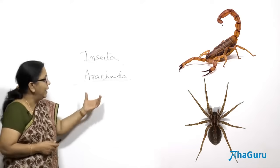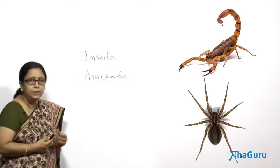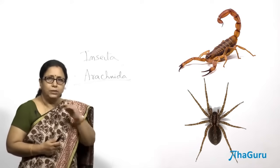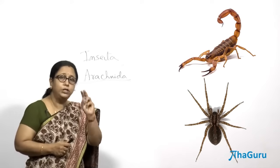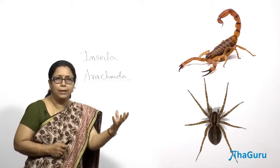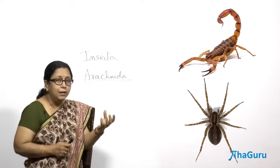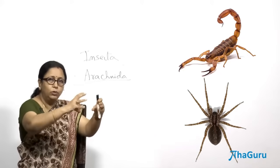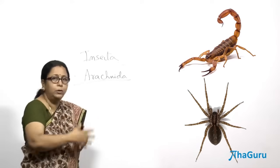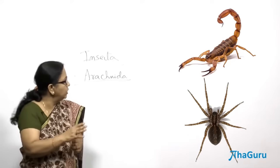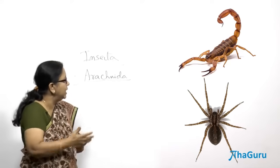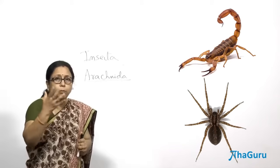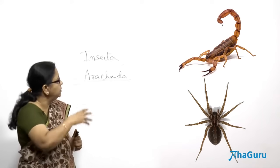Arachnida includes animals like spiders and scorpions. A characteristic feature of arachnids is that they do not have antennae. They have six pairs of appendages altogether. The first pair, called chelicerae, is full of poison and helps to grab and cut prey. The second pair of appendages supports the first. They then have four pairs of legs. Arachnids also respire with the help of book lungs.